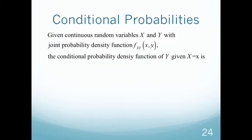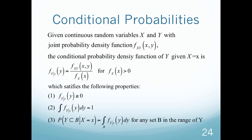That was for discrete random variables. Now let's move on to continuous random variables and joint probability density functions. The conditional probability density function is the joint probability distribution divided by each individual marginal probability, for all probabilities greater than 0, satisfying the normal conditions: probabilities greater than 0 and integrating to 1.